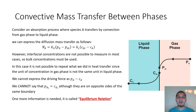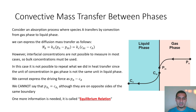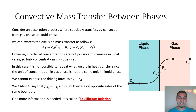The equilibrium relation is extremely important. If you don't know it, you will not be able to get the result of the mass transfer process, know the output concentrations, or determine anything — because it tells you the driving force, how far you are from equilibrium, and how fast or slow you will reach equilibrium. Without this information, you know nothing about the system.